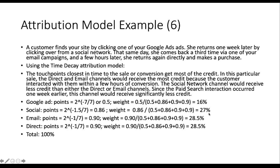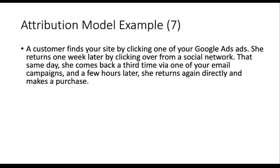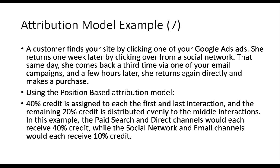For the position-based attribution model, the first and last interactions receive the most significant credit — 40% each. The remaining 20% is distributed evenly among the middle interactions. In this example, paid search (first) and direct (last) each receive 40% credit, while social and email each receive 20% ÷ 2 = 10% credit.